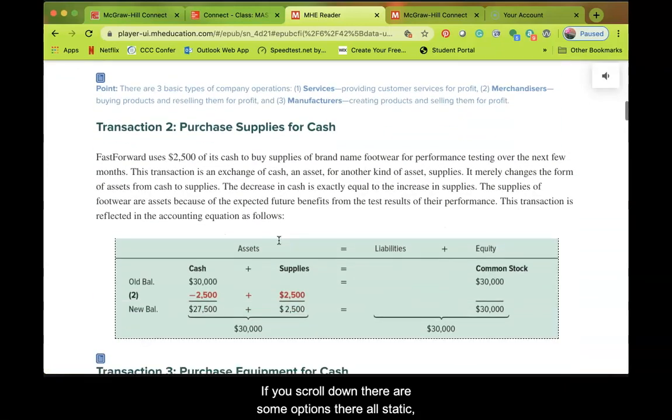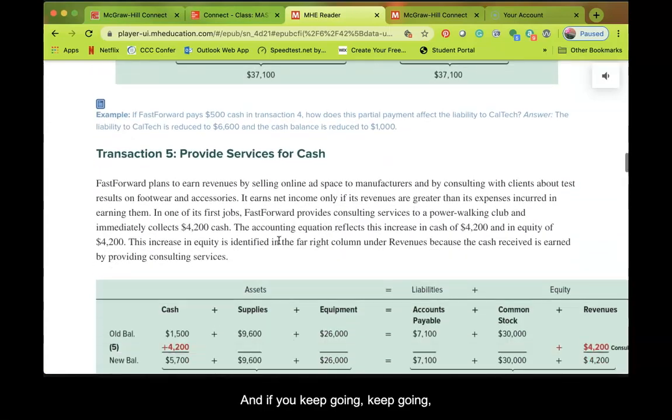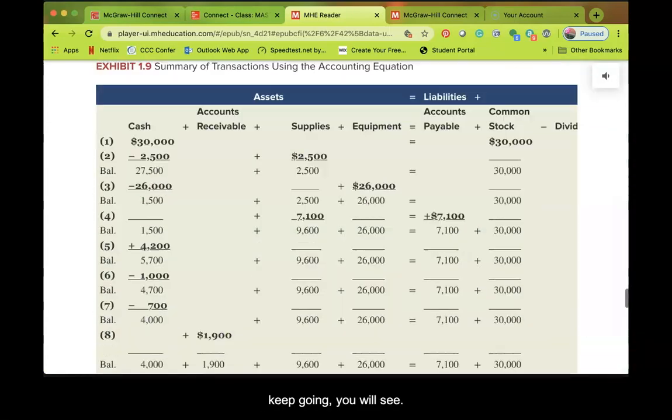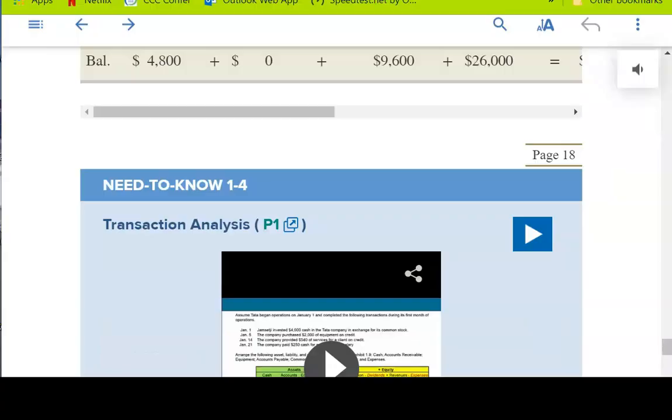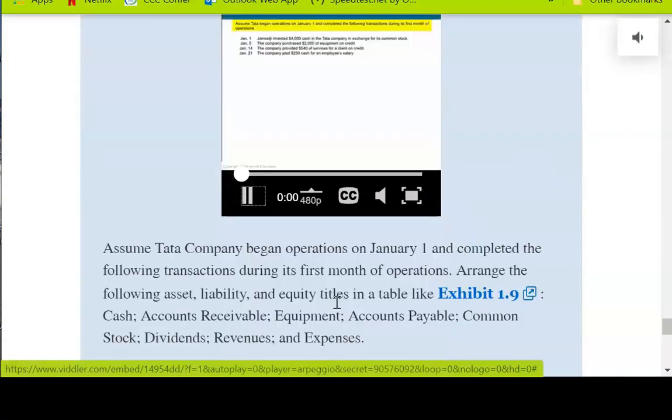There are some options. They're all static, meaning they do not change. And if you keep going, keep going, keep going, you will see. So you'll look for the Need to Know exercises within the eBook, and you'll notice that there is a play triangle. You see that? This play triangle, if you click on that, it'll actually.